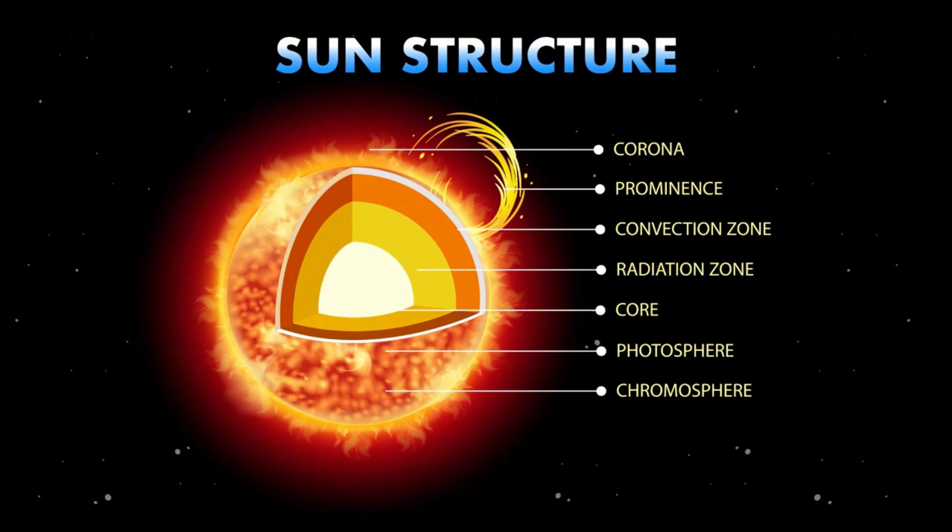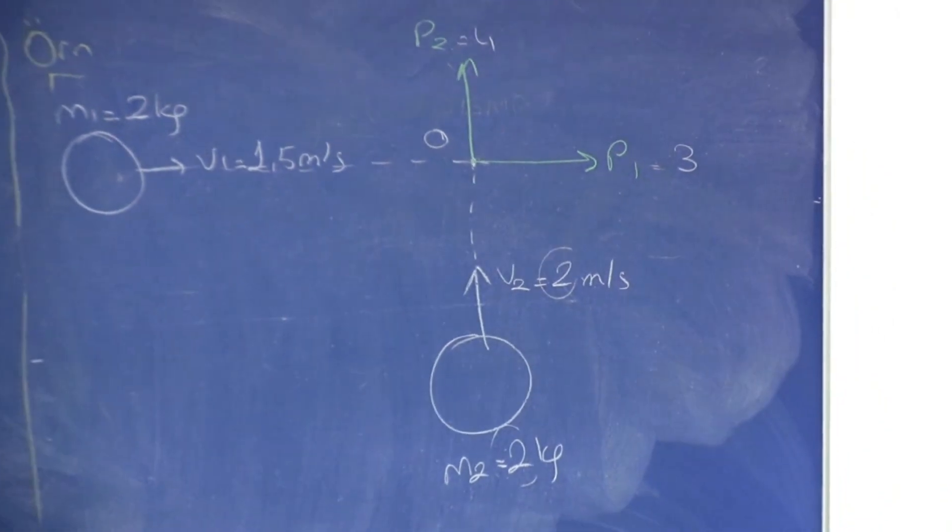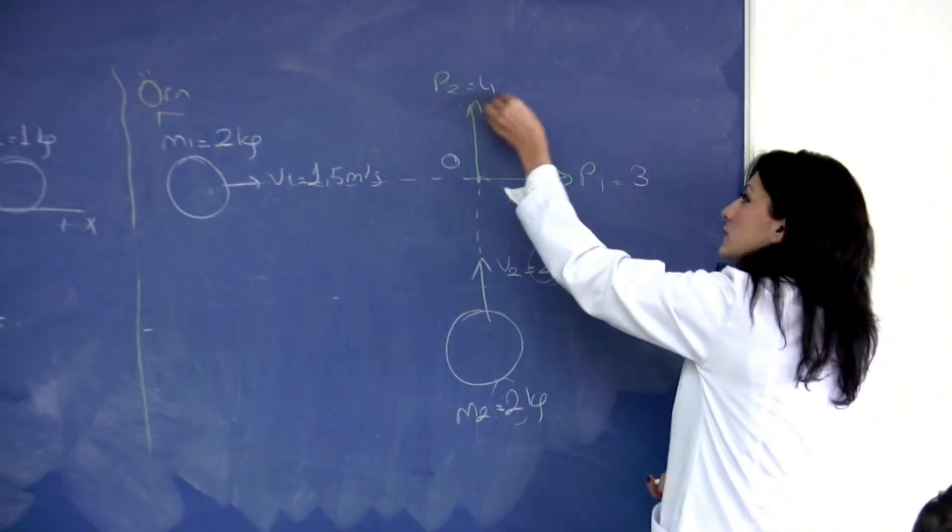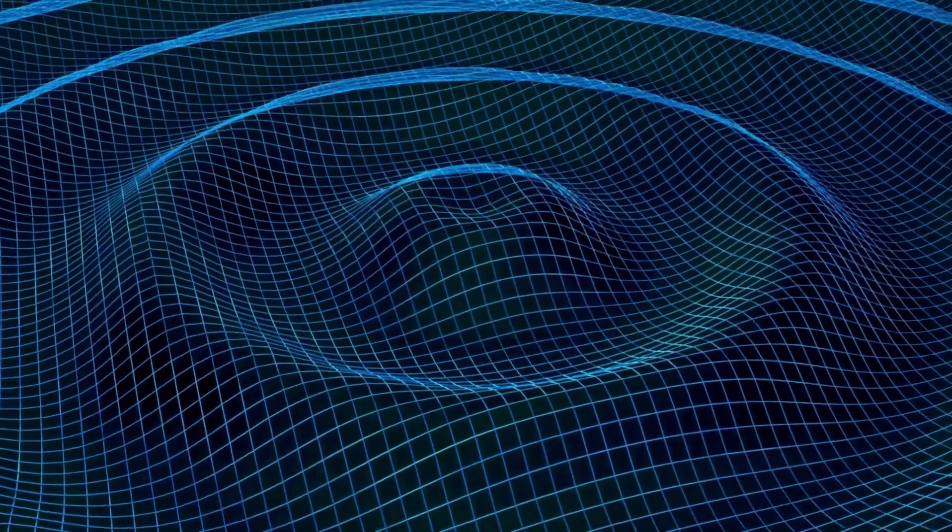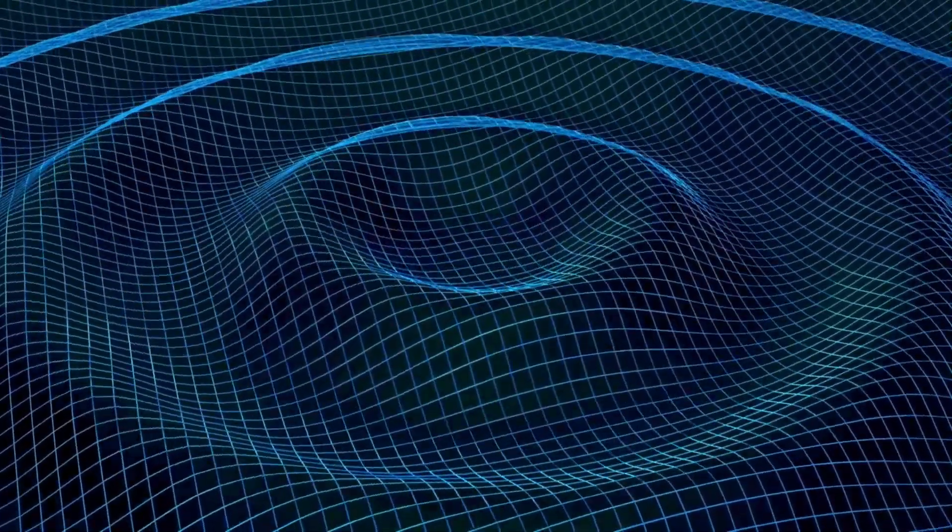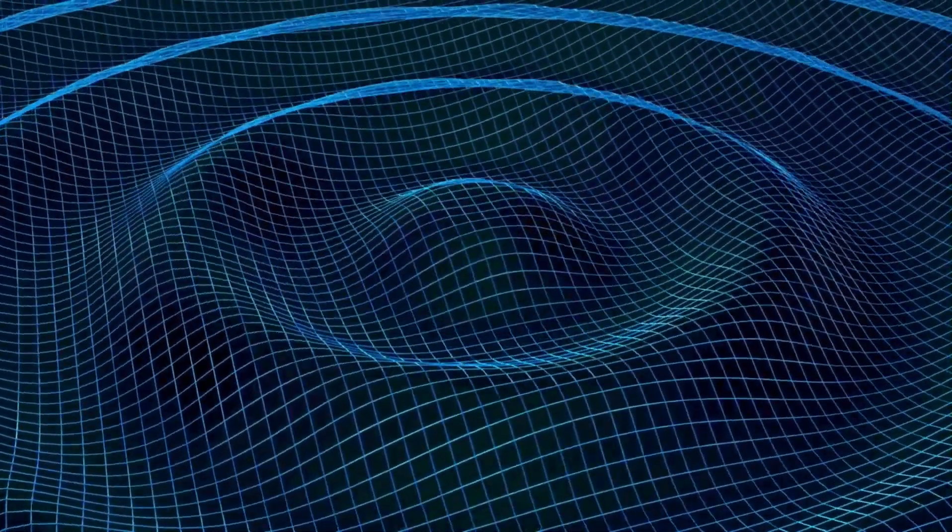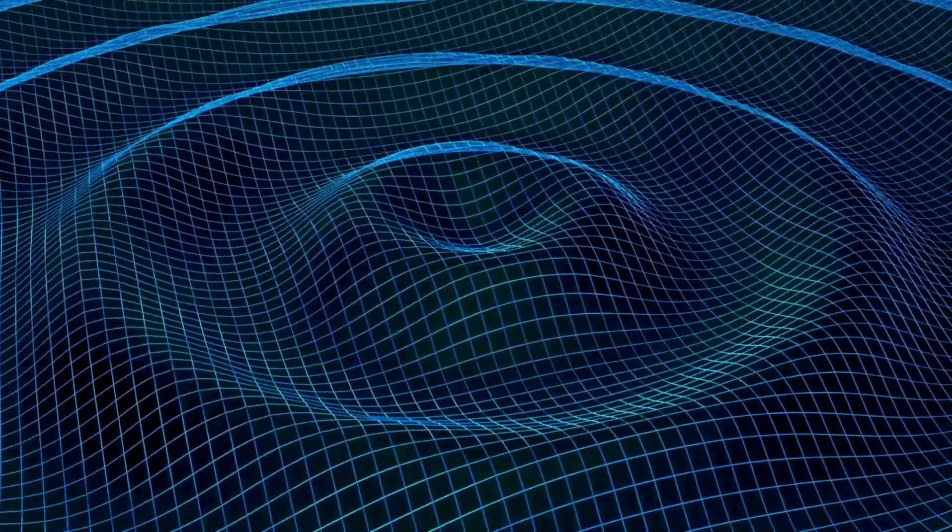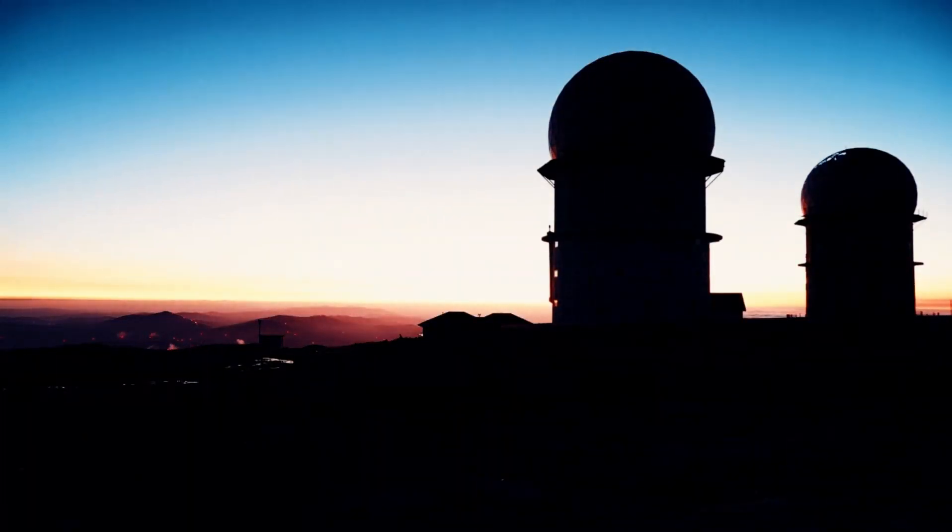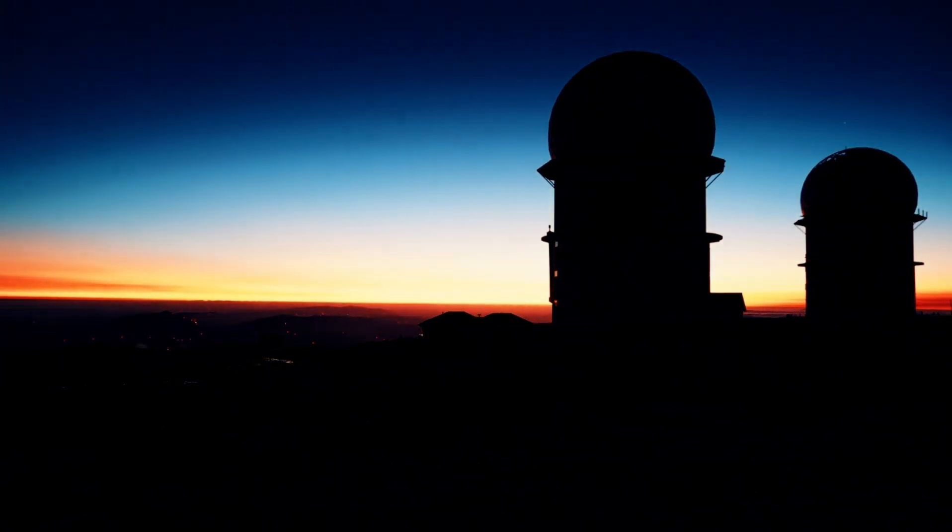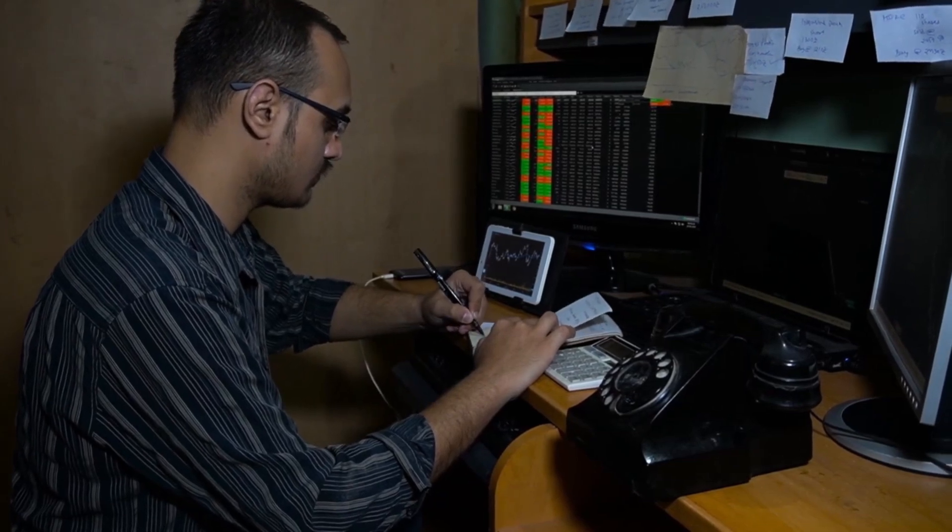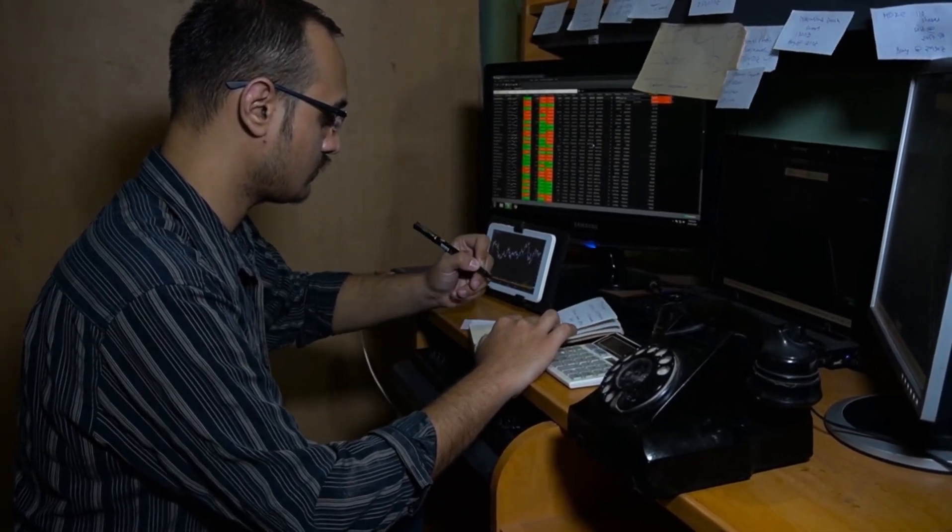Betelgeuse's supernova holds the potential to transform how we understand the universe on both micro and macro levels. Beyond its immediate scientific and observational benefits, this event will act as a proving ground for a multitude of cutting-edge technologies. Modern astrophysics has equipped us with tools far more advanced than ever before, enabling a thorough analysis of the stellar phenomenon in ways that previous generations of astronomers could only dream of. These innovations range from sophisticated telescopes like the James Webb Space Telescope to advanced computational models that simulate the processes leading to and following a supernova.